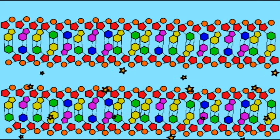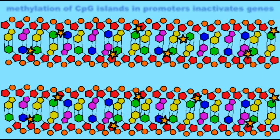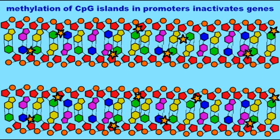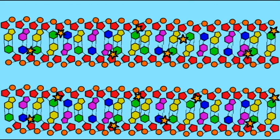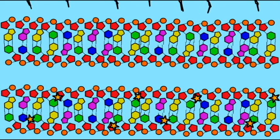Also, a cell can keep track of which chromosome came from which parent because very often the chromosome from the male parent is methylated to a greater degree.